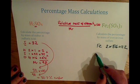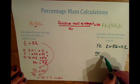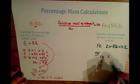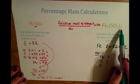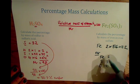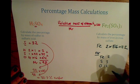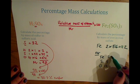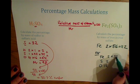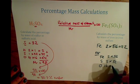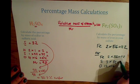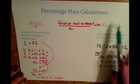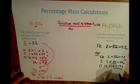Then we need to find the Mr. Looking at all the elements in the compound — Fe, S, and O — there are two Fe's, one times three sulfurs, and four times three, which is 12 oxygens. We're simply looking at the number of atoms of each element and multiplying by the relative atomic mass from the periodic table. Adding all of these up, the relative formula mass for iron sulfate is 400.